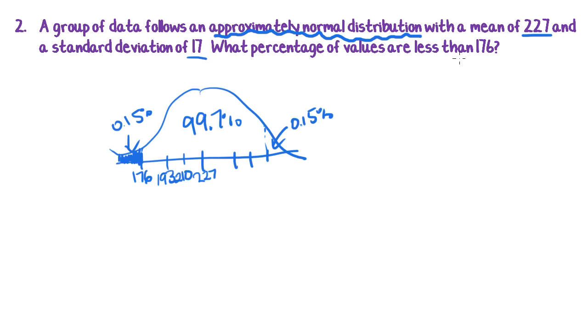So what percentage of values are less than 176? The answer is 0.15%.